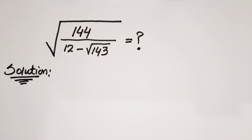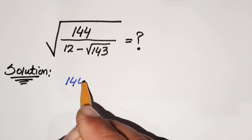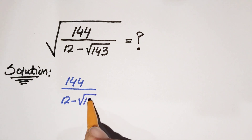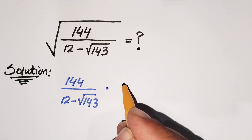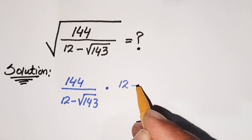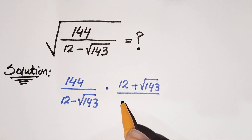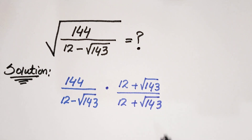So our first step: we write 144 over 12 minus square root of 143. Now we are going to multiply by the conjugate of 12 minus square root of 143, which is 12 plus square root of 143, divided by 12 plus square root of 143.